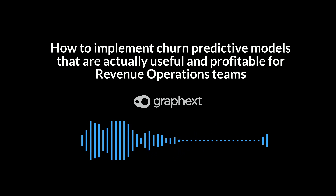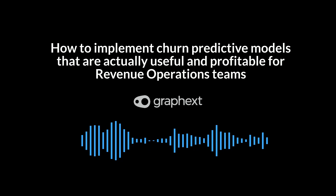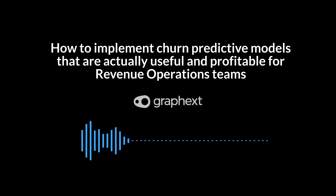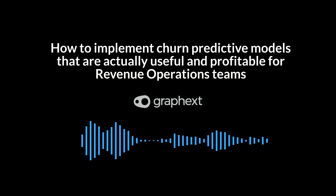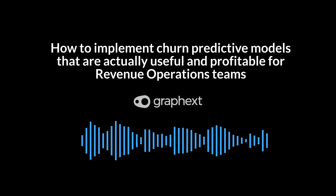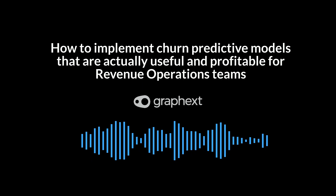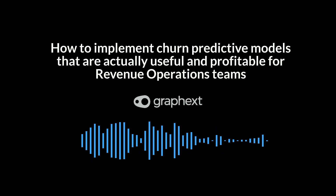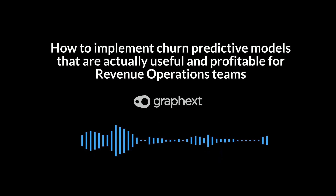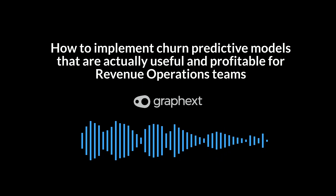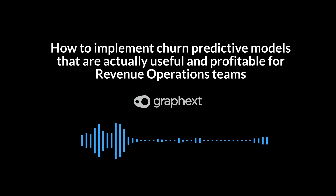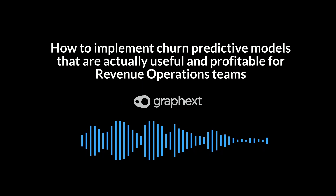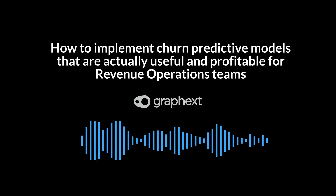We've got a good handle on the different flavors of churn and why it's so important to understand those nuances. But let's get down to brass tacks — what kind of data do we actually need to collect to build a churn prediction model that's actually useful? Because data without insights is just noise. The article kicks things off with transactional sales data. That one seems kind of obvious — we need to know what they're buying — but it goes deeper than that. It's not just about what they bought, it's about when they bought it, how often they're buying it — understanding those buying patterns.